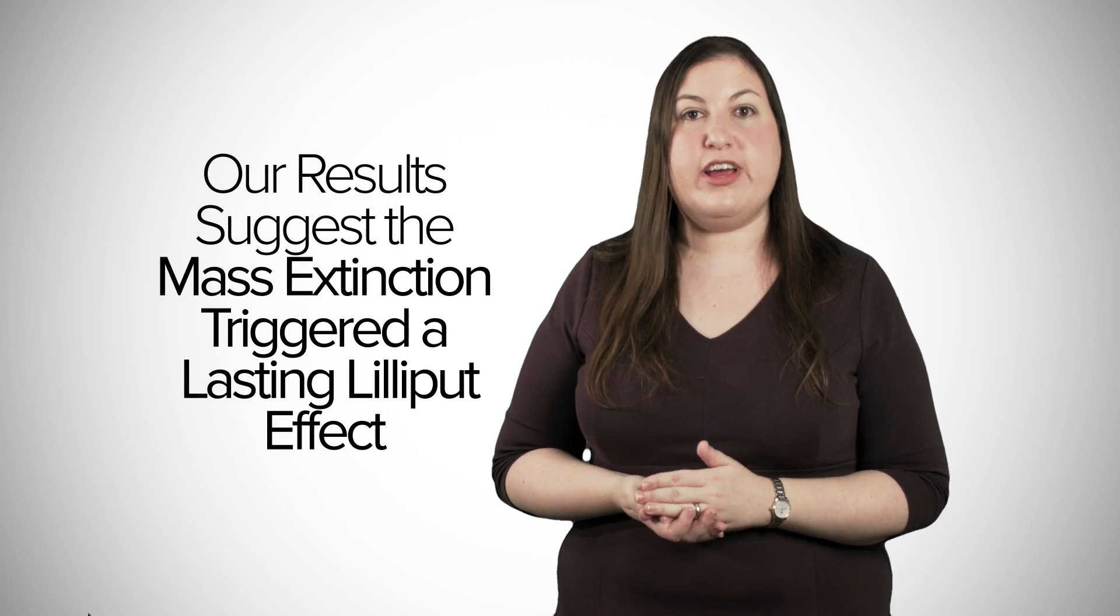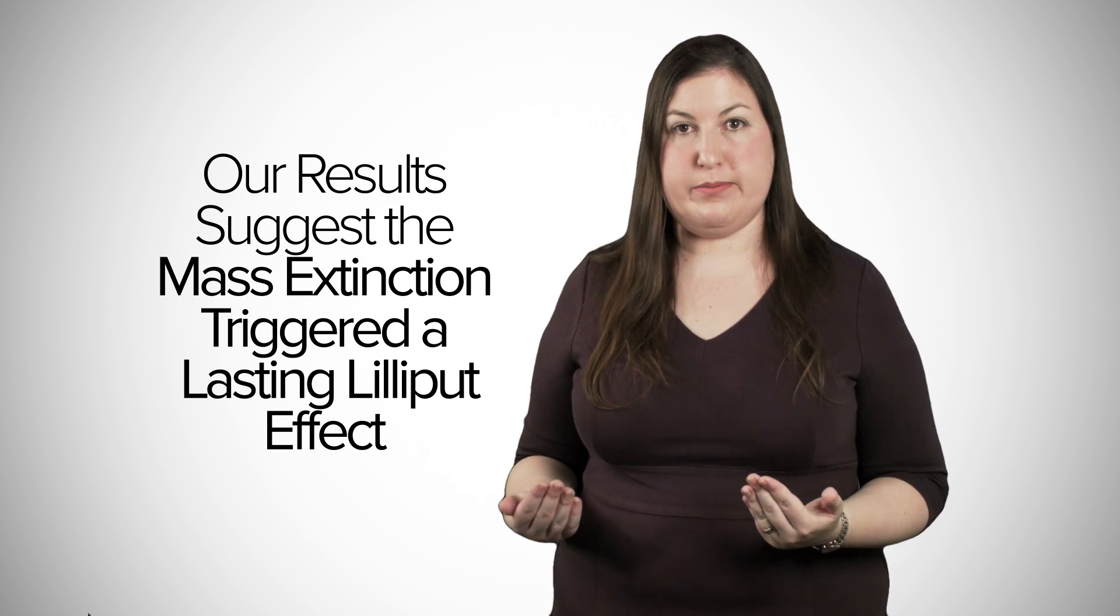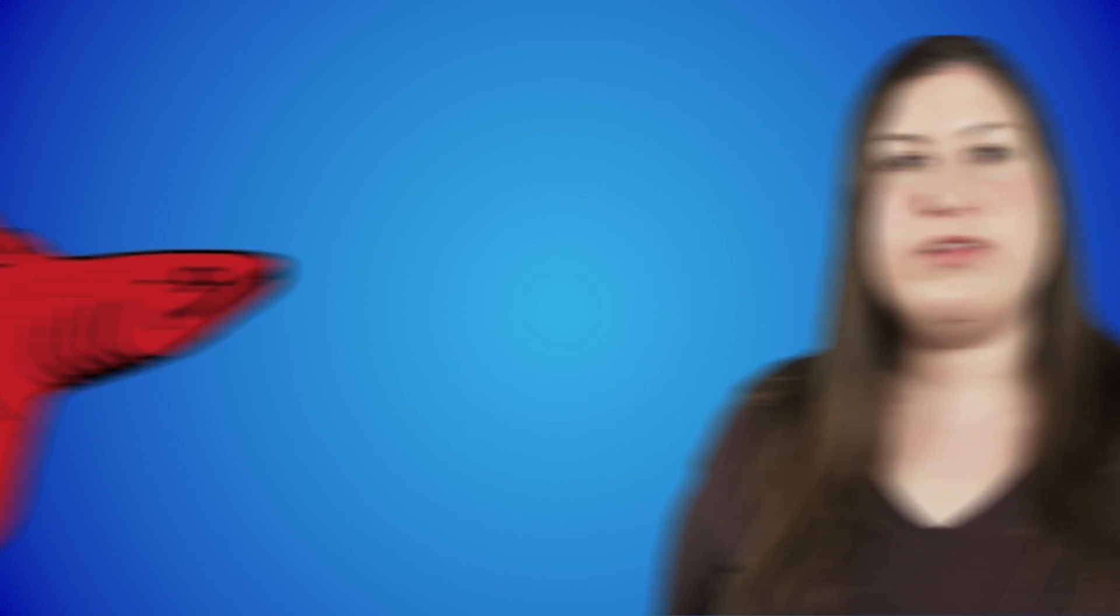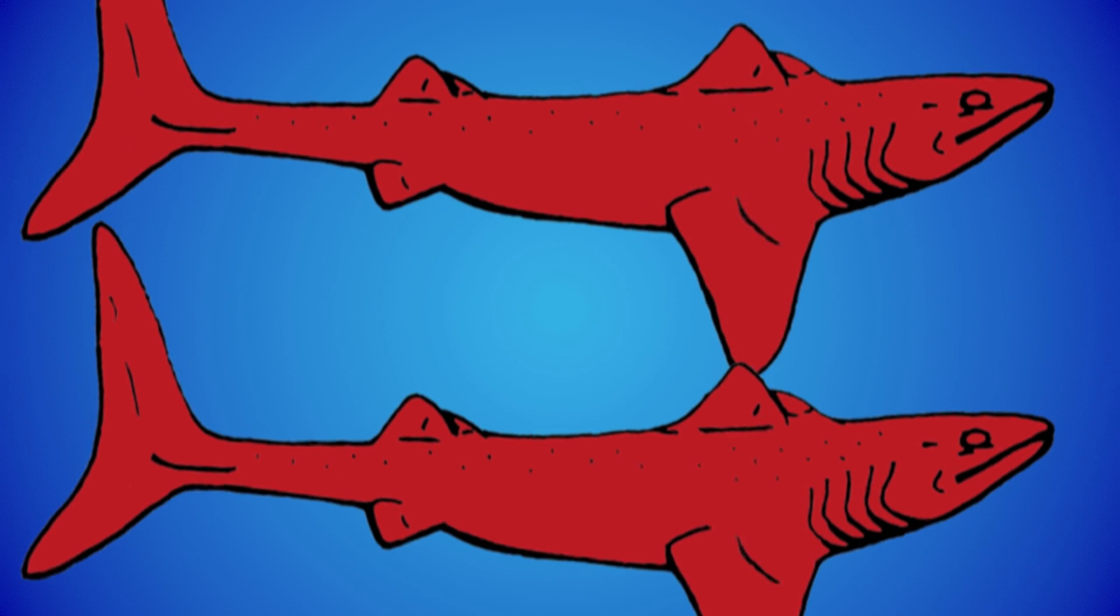Our results suggest that the mass extinction triggered a lasting Lilliput effect, in which smaller organisms are favored. Before the extinction, the ecosystem is stable, thriving, and crowded, so that organisms could and had to spend the time to grow to large sizes before they reproduce. But in the aftermath of the extinction, that ends up being a bad strategy in the long term.